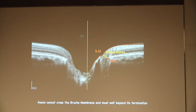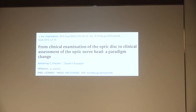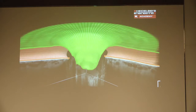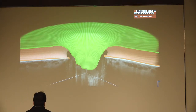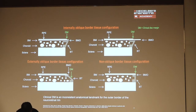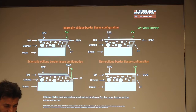The internal limiting membrane and the Bruch's membrane — whatever comes in between is nerve fibers, because the axons can never pass across blood vessels and can never cross Bruch's membrane; they must exit beyond its termination. So the true disc margin, according to studies published by Chauhan et al. and Alexander et al., states that only after the termination of Bruch's membrane can the retinal nerve fiber layers dip into the optic nerve head. This is the true disc margin, and it is not clinically or photographically visible.